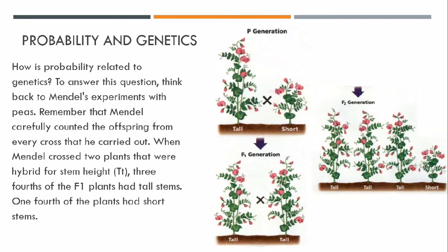How is probability related to genetics? To answer this question, think back to Mendel's experiments with peas. Mendel carefully counted the offspring from every cross that he carried out. When Mendel crossed two plants that were hybrid for stem height, three-fourths of the Generation 1 plants had tall stems, and one-fourth of the plants had short stems.